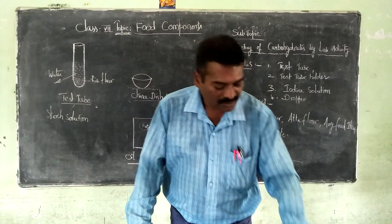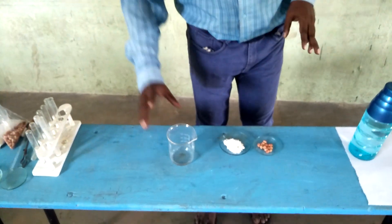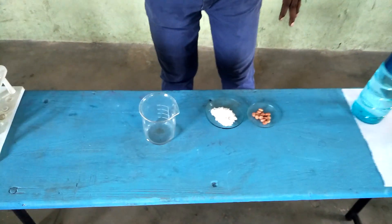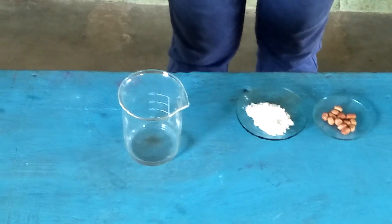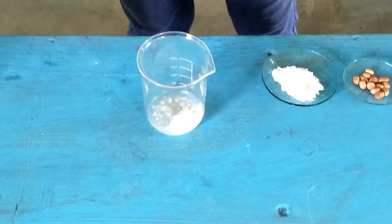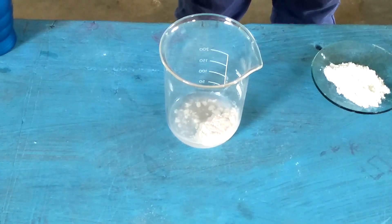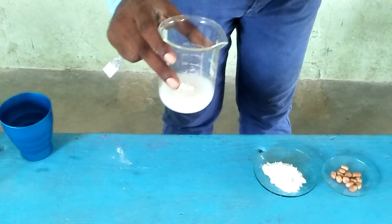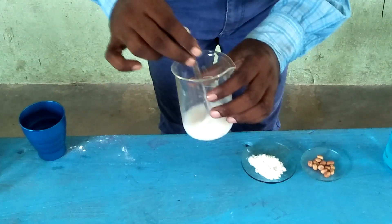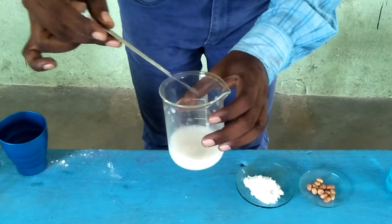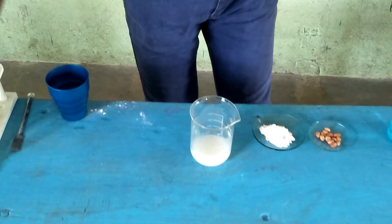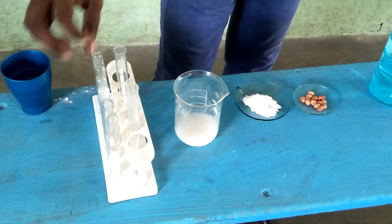First of all, take one beaker. In that beaker, add one or two tablespoons of rice flour or atta — whatever is available — and mix it properly by slowly adding water to prepare the starch solution. As we discussed in previous sessions, starch solution has a rich content of carbohydrates. Uniformly mix it properly using a spatula and keep it aside.